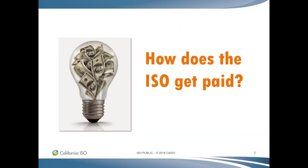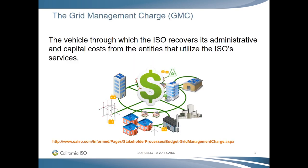The Grid Management Charge, or GMC, is the vehicle through which the ISO recovers all of its administrative, operating, and capital costs from the entities that use ISO services. The current GMC rate structure includes seven cost categories, or buckets, consisting of 17 separate charge codes. We follow up with a meeting in October to review and discuss our draft budget before finalizing it and requesting Board of Governors approval in December.